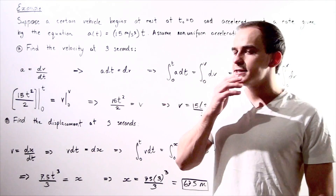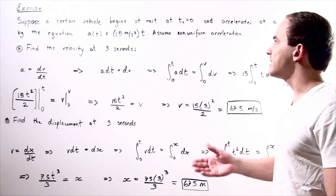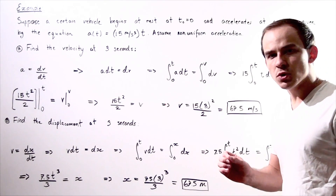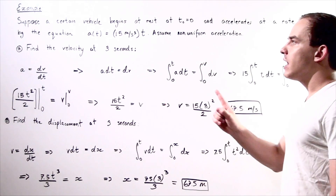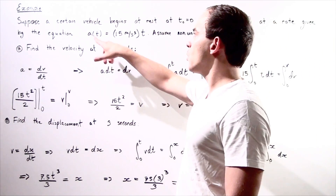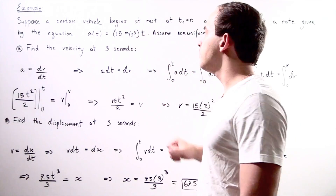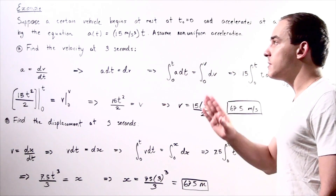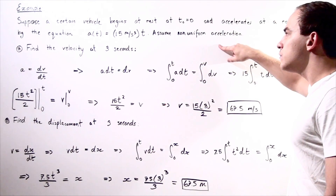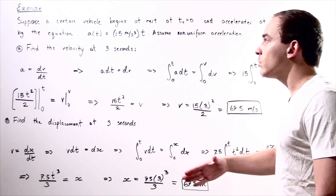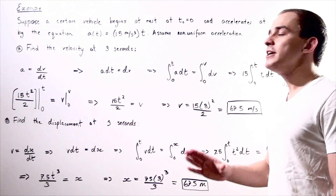Let's look at the following example. Suppose a certain vehicle begins thrust at time t equals zero seconds and accelerates at a rate given by A(t) = 15 meters per second cubed multiplied by t. We're making the assumption that our acceleration is non-uniform, meaning our acceleration is changing — it's increasing with increasing time.